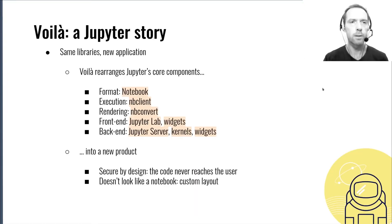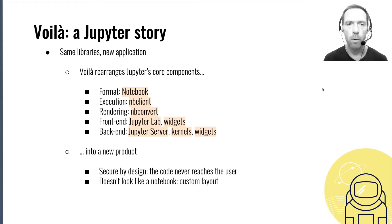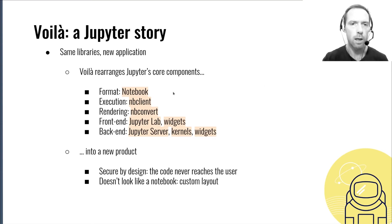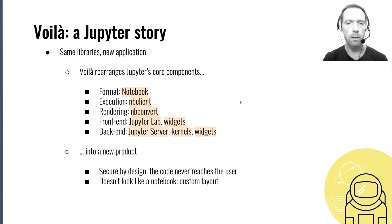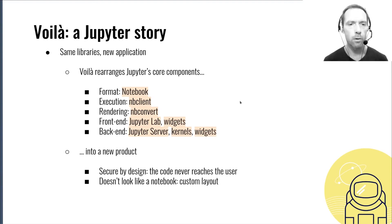We want to emphasize how Voila really leverages the Jupyter ecosystem. Although it's a completely new application under the hood, it really just rearranges Jupyter's core components. It uses the same notebook format, which is a well-specified JSON format. For execution, we use nbclient, and nbconvert for the HTML rendering. JupyterLab components and widgets are used in the front-end. In the back-end, we use the Jupyter server, kernels, and also widgets. All these components are rearranged into a new product which is secure by design, because the code stays in the back-end and never reaches the user.